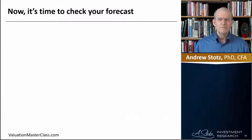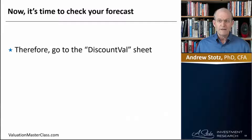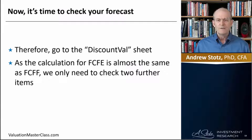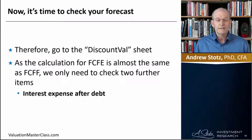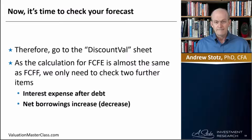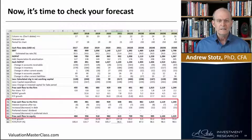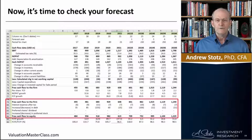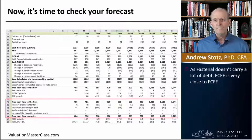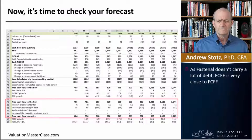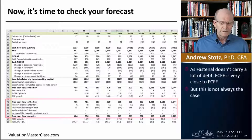So now it's time to check your forecast. Go to the discount value sheet. As the calculation for free cash flow to equity is almost the same as free cash flow to the firm, we only need to check two further items: the interest expense and debt. Here we can see those adjustments that need to be made, and we can arrive at our free cash flow to equity. Fastenal doesn't carry a lot of debt, so free cash flow to equity is very close to free cash flow to the firm — but this is not always the case.